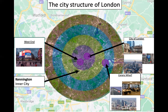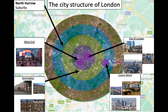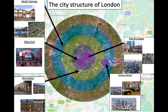Moving on to the inner city. One example is Kennington, where there are a variety of house types but they're all quite densely packed in — some older Georgian buildings and some 1960s blocks of flats. Moving on to the suburbs: one example is North Harrow, where we have semi-detached larger houses, more green space, and the suburbs often have their own small high streets to serve the people living there.